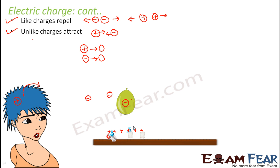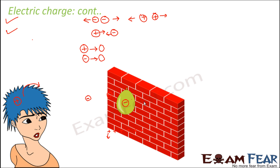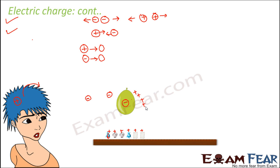In a very similar way, in the case of the wall — the wall was neutral. But when the negatively charged balloon was brought near the wall, all the electrons present in the wall tended to move away from the negatively charged balloon. So whatever was left toward the balloon were all positive charges, and as a result, attraction happened. This is how attraction between an uncharged body and a charged object takes place.